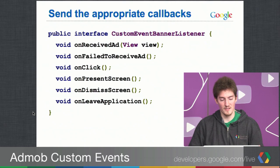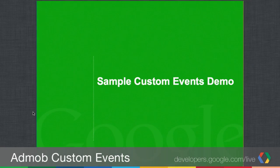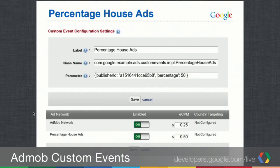That's it for implementing custom events. Now we're going to walk through some sample custom events that you can implement. The first example is percentage house ads, which will allow you to request AdMob house ads a percentage of the time.